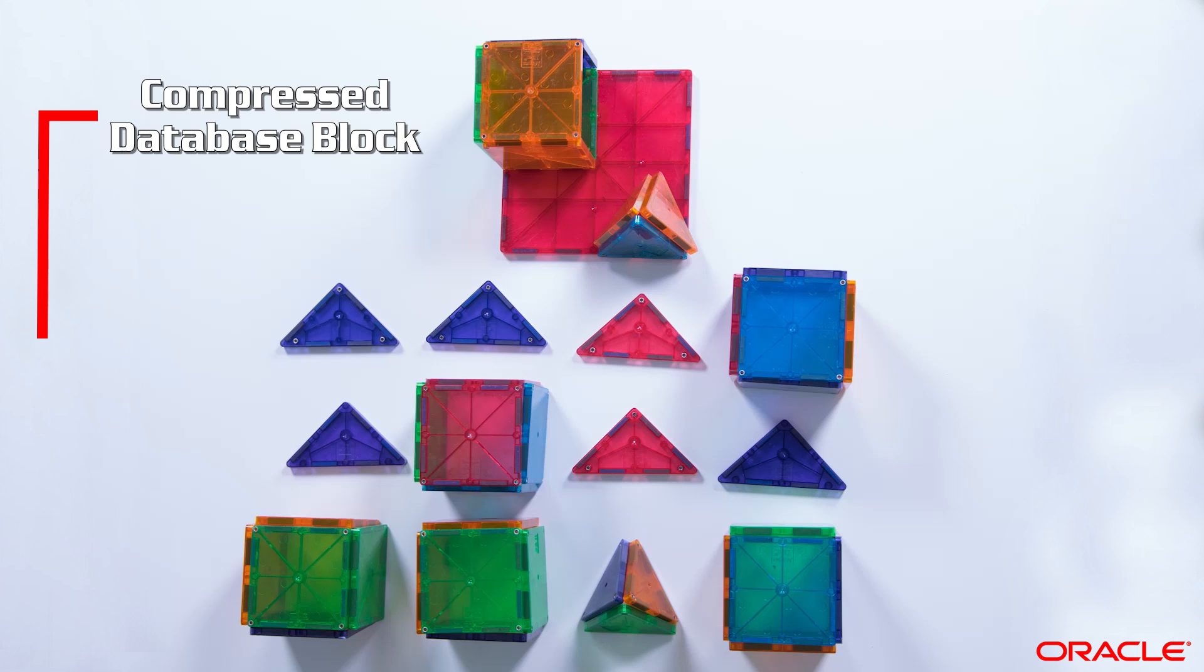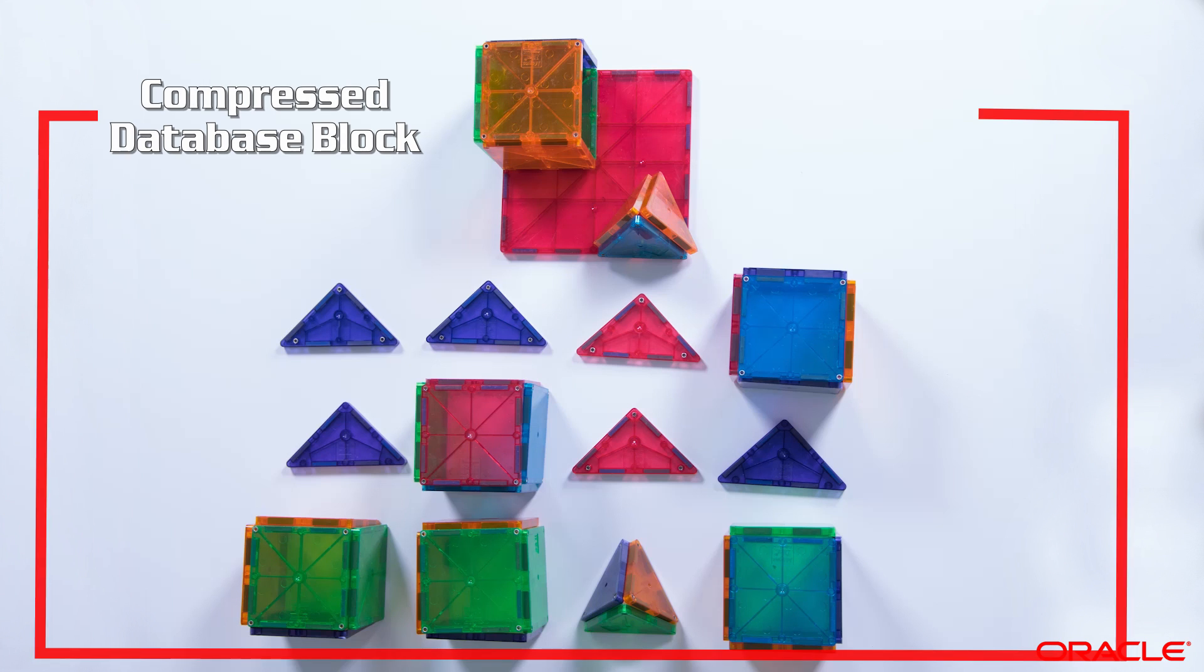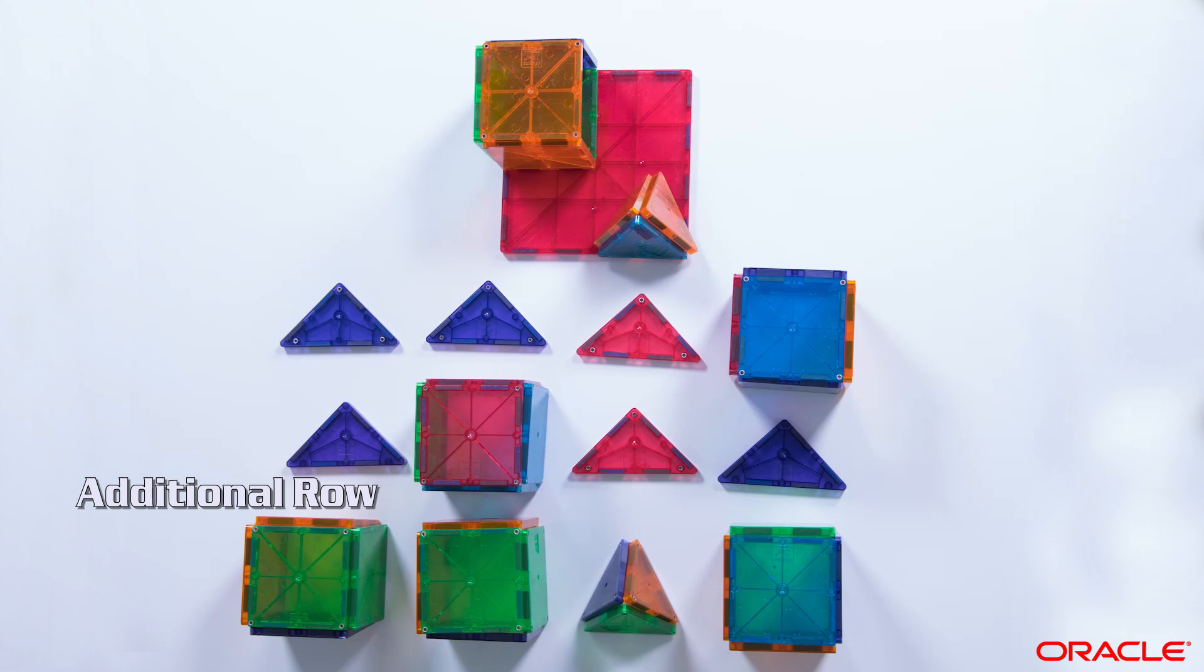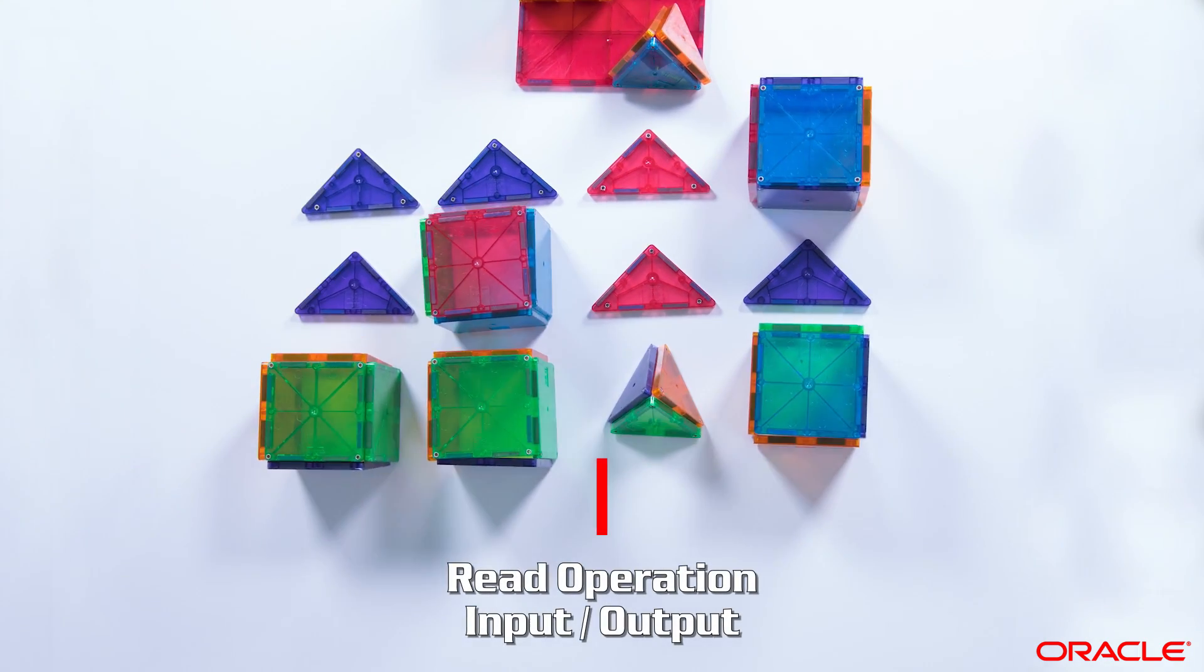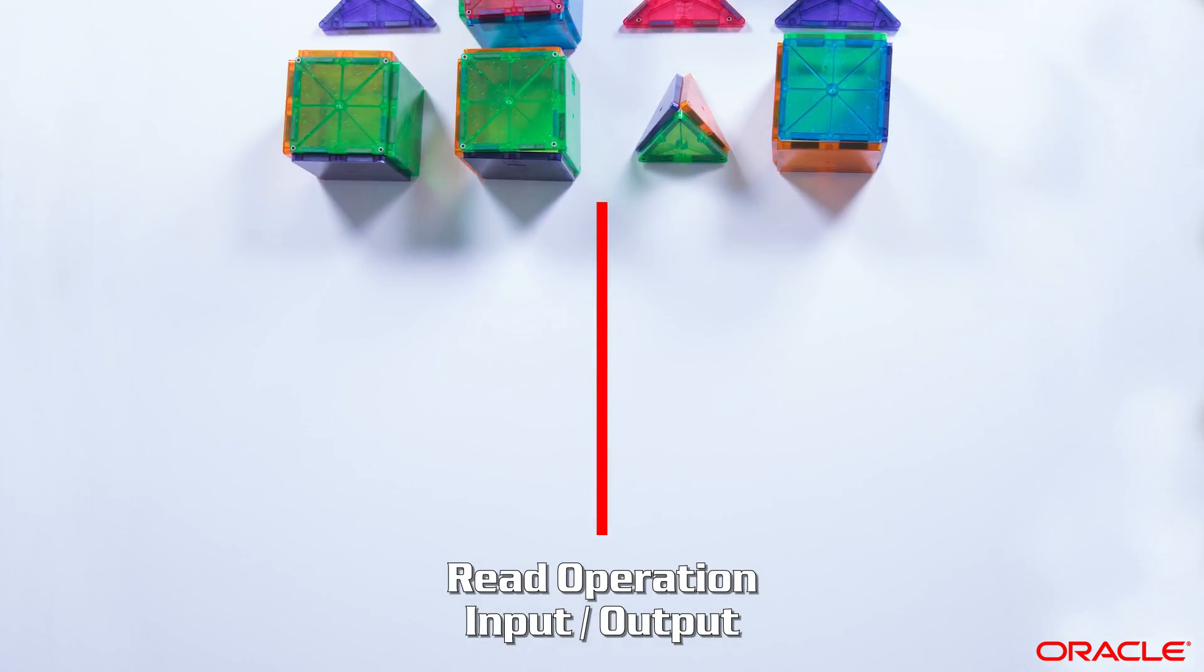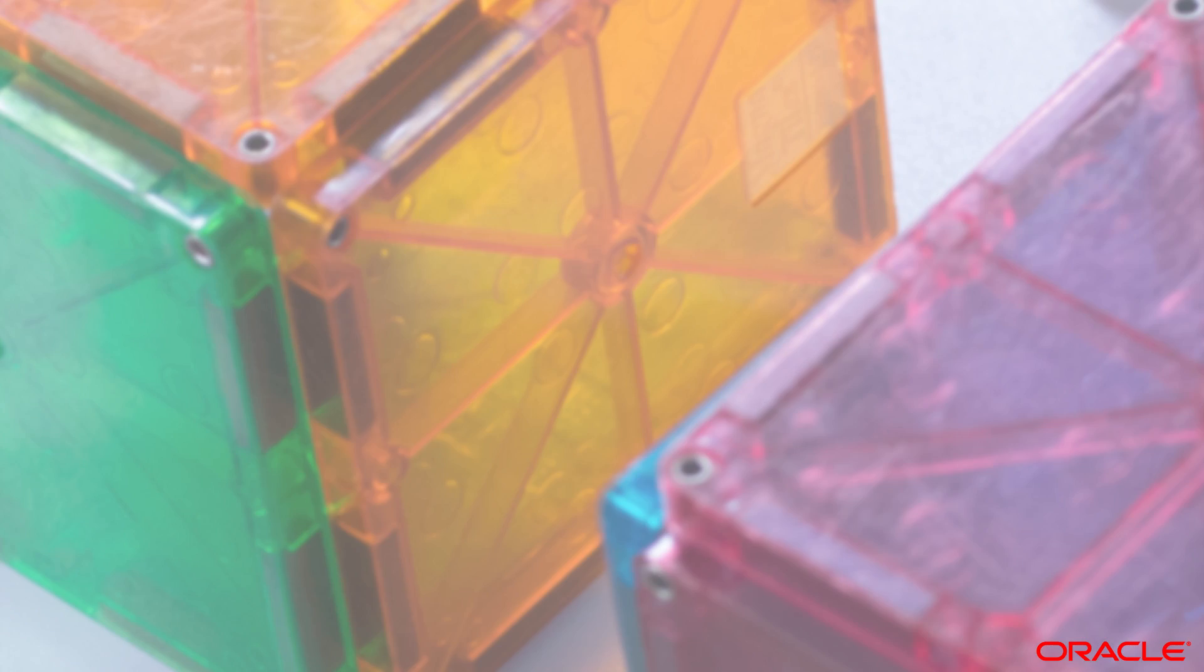Now, here's the compressed database block with an additional row added. We were able to add this row because compression freed up space in the block. So now when the database reads the block from storage into memory, more user data is read into memory with the same amount of effort as with the uncompressed block. So I've shown you how Advanced Compression can help improve performance.